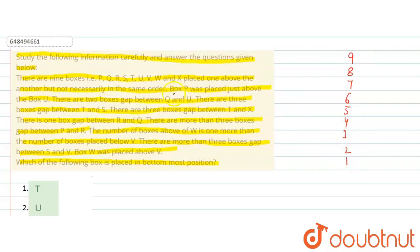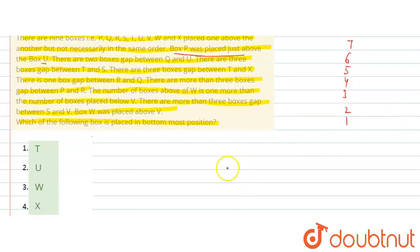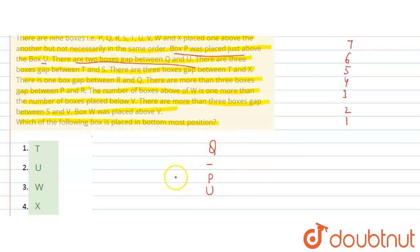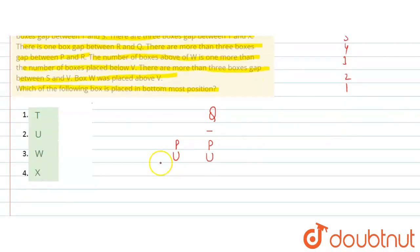It is given that P was placed just above U, so box P is just above U. It is also given that there are 2 box gaps between U and Q. So here is U, then 1 box gap, 2 box gap, then Q. So P is here, U is here, 2 box gap — 1, 2 — then Q comes here.